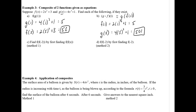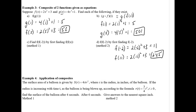The next example finds f of f of negative 2 using two methods. Let's do method 2 first — find f of negative 2: 2 times negative 2 squared plus 3 gives us 2 times 4, which is 8 plus 3, so 11. That output becomes the input of the outer f: f of 11 is 2 times 11 squared plus 3. 11 squared is 121; 2 times 121 is 242; add 3 and you get 245.